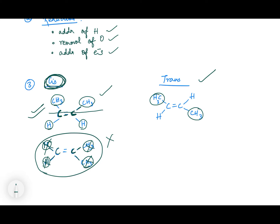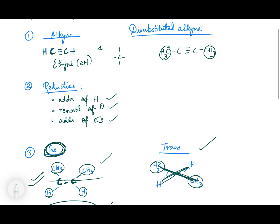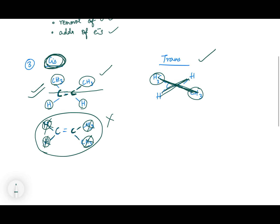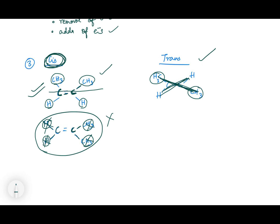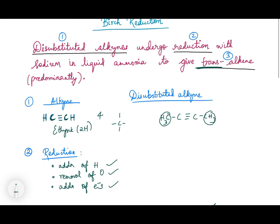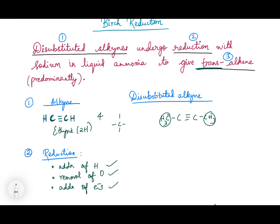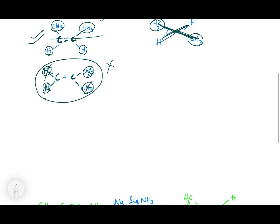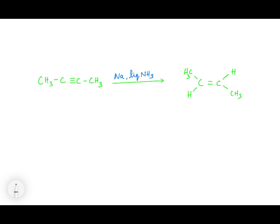In trans, similar groups are present on the opposite sides. If you draw a line, similar groups form a cross on opposite sides — hence it is called trans. So, disubstituted alkynes undergo reduction with sodium in liquid ammonia to give trans alkene as the major product. Predominantly, trans alkene will be formed.